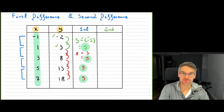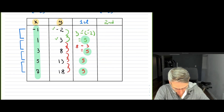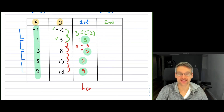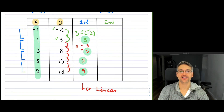Are the first differences always going to be equal? No — that's exactly what you're checking. If the first difference is constant — in this case it's five — then you know that if you graph this data you get a linear graph. If the first differences are not the same, then you know it's a non-linear graph.